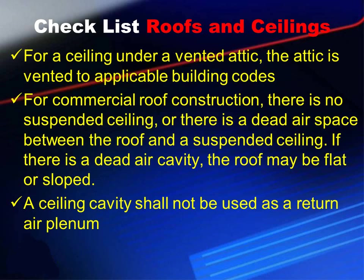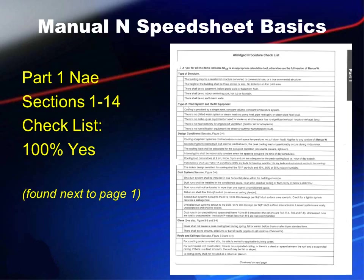Roofs and ceilings: for a ceiling under a vented attic, the attic is vented to applicable building codes. For commercial roof construction, there is no suspended ceiling or there is a dead air space between the roof and a suspended ceiling. If there is a dead air cavity, the roof may be flat or sloped. A ceiling cavity shall not be used as a return air plenum — that's a big no-no. Those systems are going to cause heartache. That's all the rules, and if you can say 100% yes to all of them, you'll get a great load calculation using the Manual N Speed Sheet.